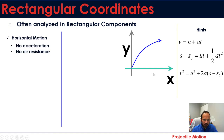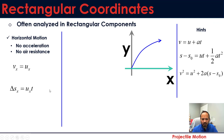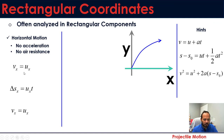For the horizontal part of projectile motion, there is no acceleration in the X direction because it is free flight — the only acceleration is downward vertical. With no air resistance, this gives us Vx = Ux, meaning final velocity equals initial velocity. Similarly, the displacement equation becomes ΔSx = Ux·t, and the third equation simplifies the same way with A equal to zero. These are the equations we will use for the X direction, derived from equations we already know.